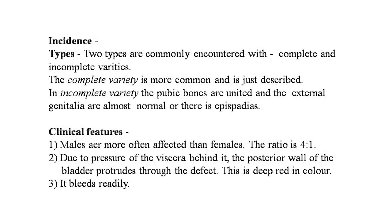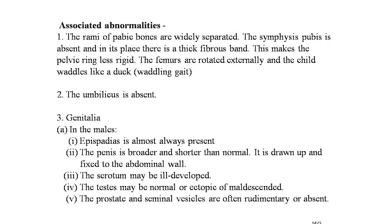The incidence of ectopia vesicae is rare — once in 50,000 births. There are two types: complete and incomplete varieties. The complete variety is more common. In the incomplete variety, the pubic bones are united and external genitalia are almost normal, and there is an epispadias. Males are more often affected than females — the ratio is 4:1. Due to the pressure of the viscera behind it, the posterior wall of the bladder protrudes through the defect, which is deep red in color and bleeds readily.